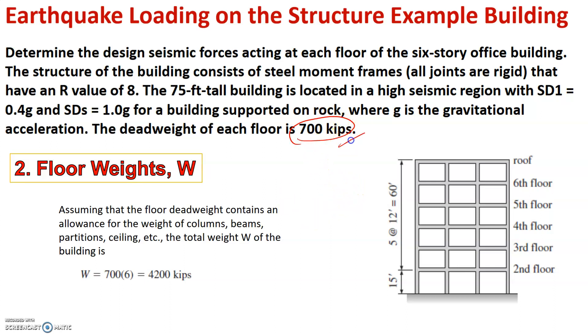However if this figure is not given to us we will have to calculate the dead weight on each floor by lumping the dead weights onto the floor levels. That is we divide the structure at mid height of each floor and we lump these weights to the nearest floor and thereby we can calculate the weight of each floor. In this case the total weight is 700 times 6 which is 4200 kips.